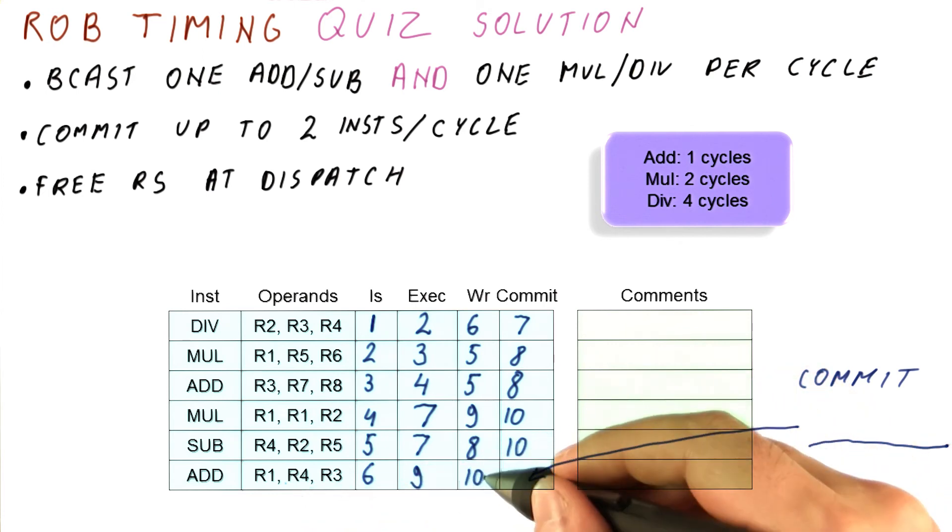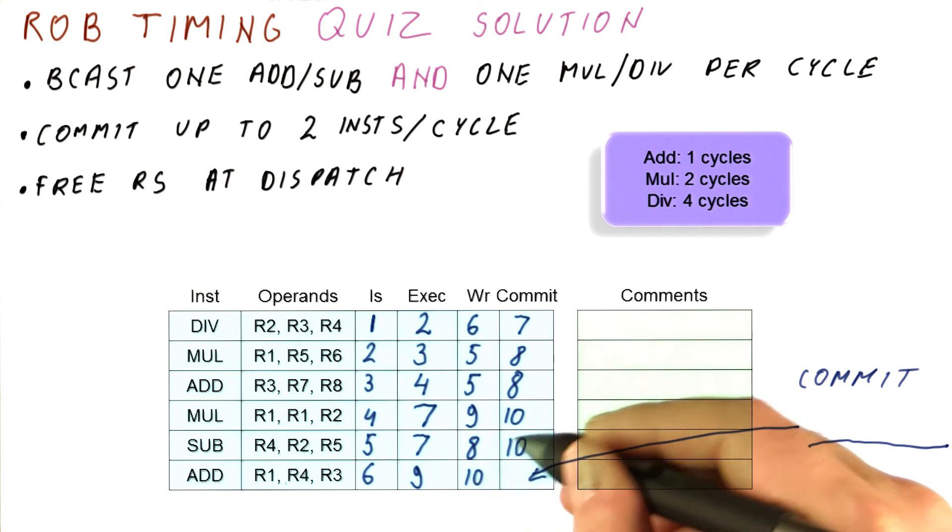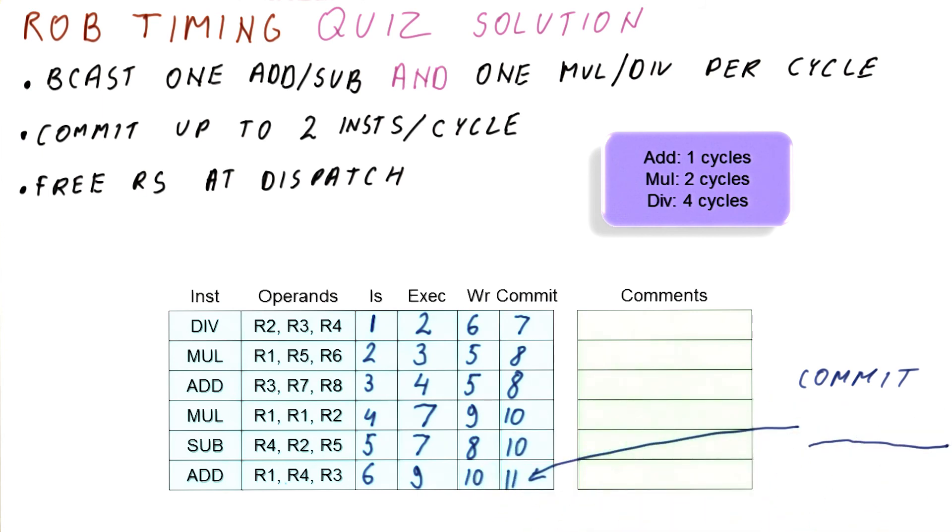And now, interestingly enough, this add is done just in time to try to commit it in cycle 11, so it's going to commit in cycle 11. So the final answer for the final part of the quiz is that the commit is happening in cycle 11 here.